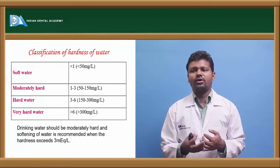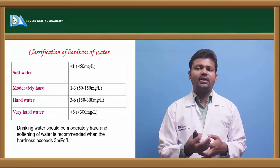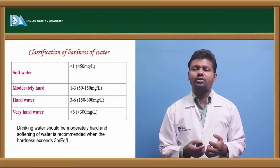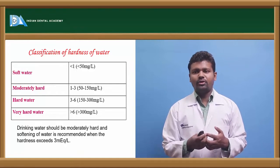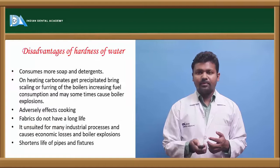The classification of hardness of water - soft water is below 1, that is 50 mg per liter. Very hard is above 6, that is 300 mg per liter. Drinking water should be moderately hard and softening of water is recommended when the hardness exceeds 3 mEq/L.